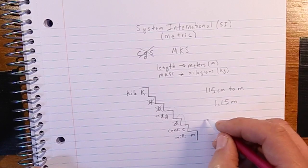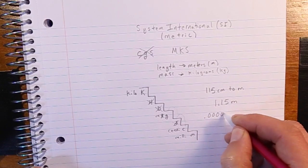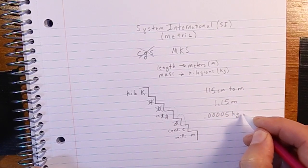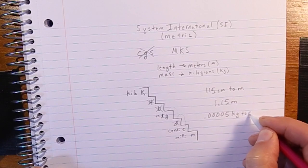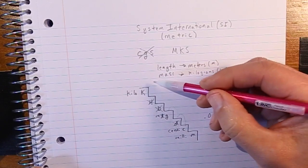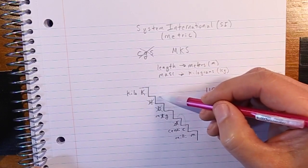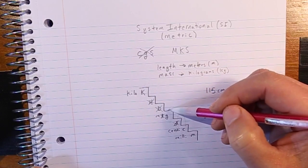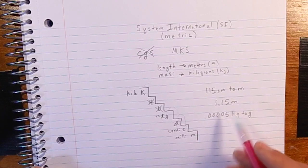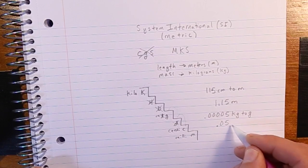That gives us 1.15 meters. Let's do another one: 0.00005 kilograms converted to grams. We're on the kilogram step and move to the gram step — that's three steps to the right. So we move our decimal place three places to the right, giving us 0.05 grams.